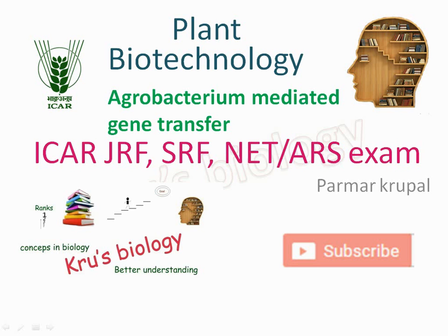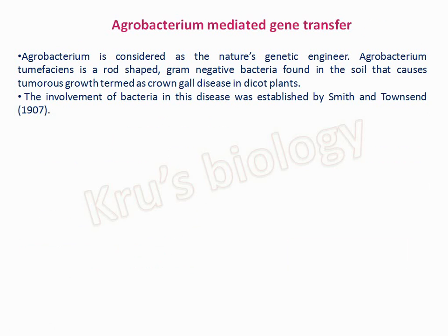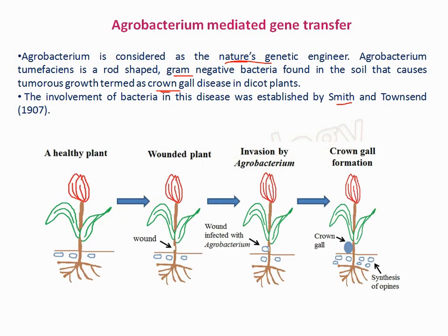Welcome to Cruise Biology. Today we are talking about Agrobacterium-mediated gene transformation, a very important topic as several exam questions come from this topic. Agrobacterium is a soil-borne gram-negative bacteria that causes the crown gall tumor-like disease in dicot plants by transferring genes into plants, so it is called nature's genetic engineer. Smith and Townsend identified the involvement of this bacteria. The bacteria attaches at the site of a wound and forms a crown gall tumor.